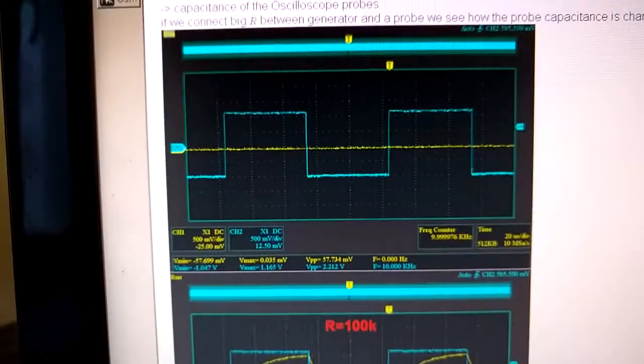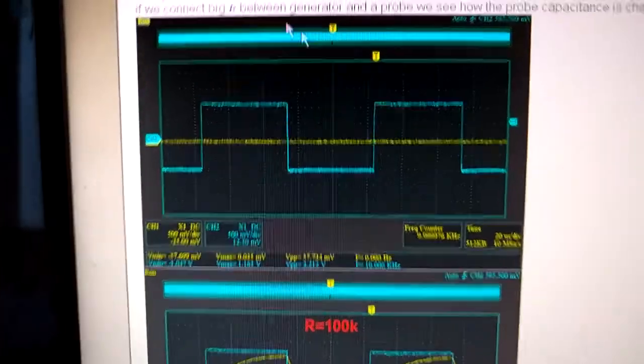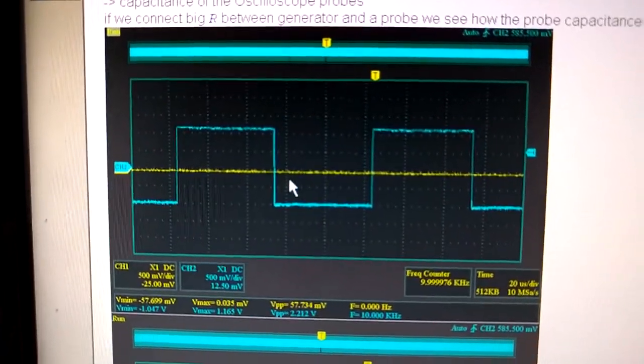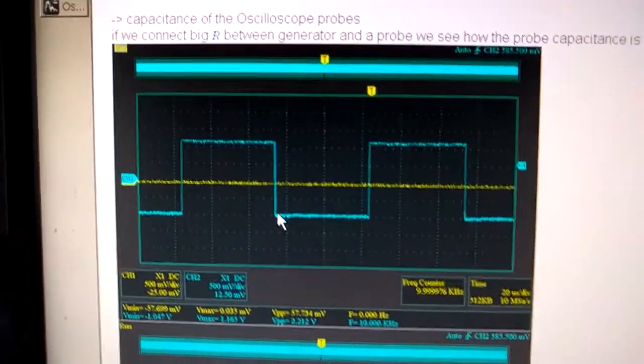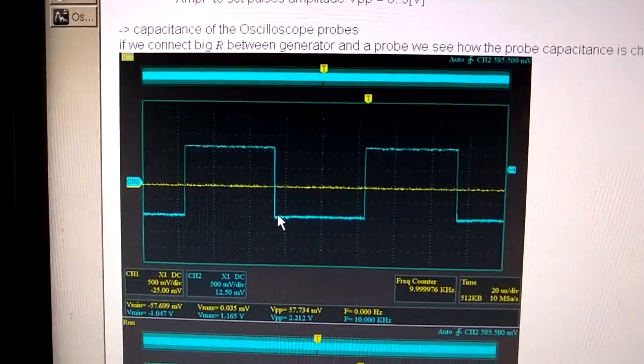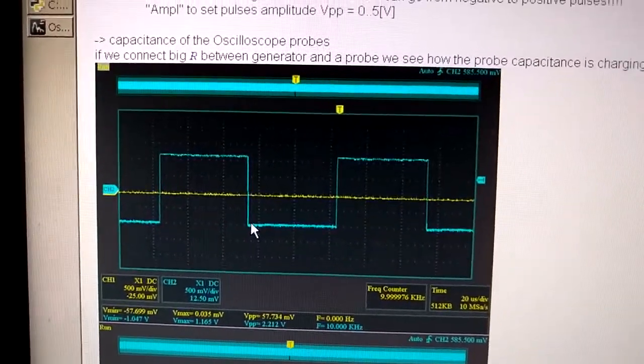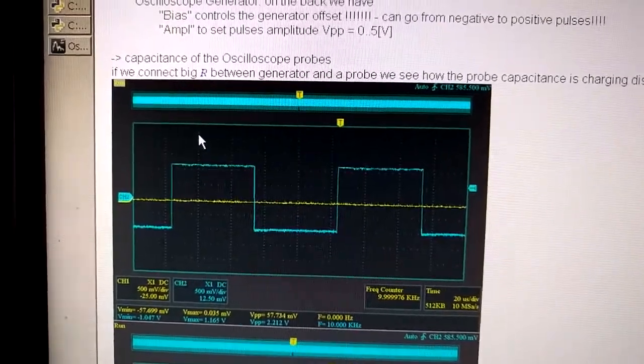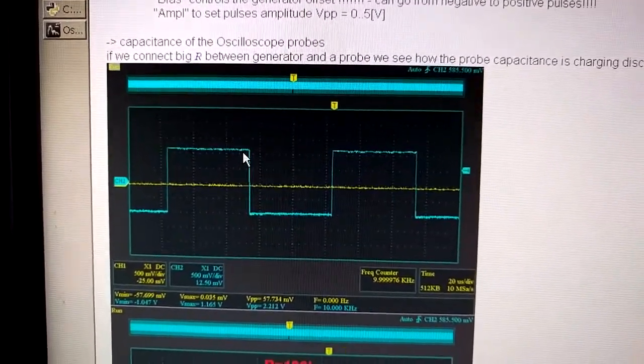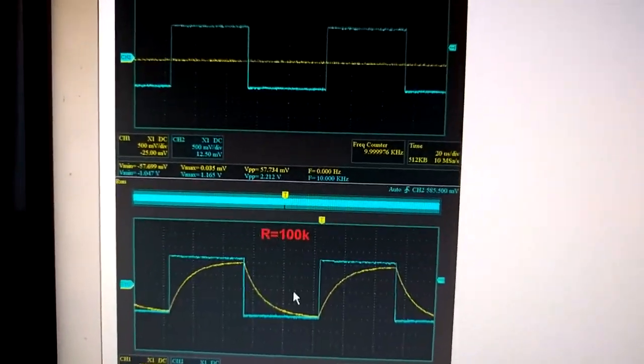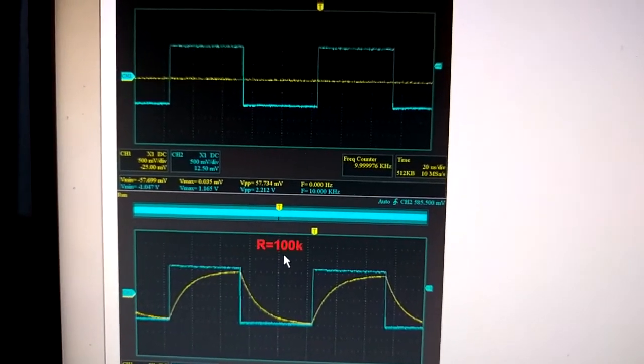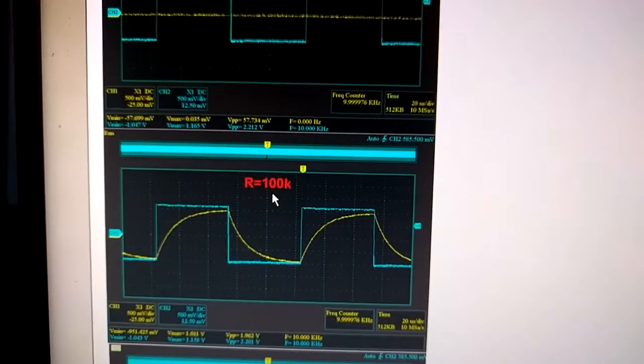I actually have the graphs for the probe. So I did those measurements. This is the pure generator pulses and the resistance is infinite. Actually, when there is no resistance, it is connected directly, so the resistance is zero.